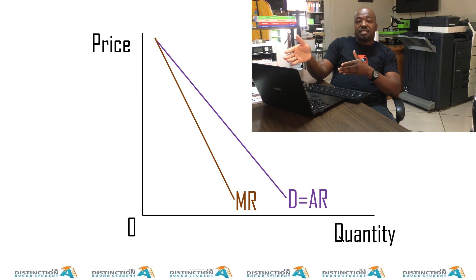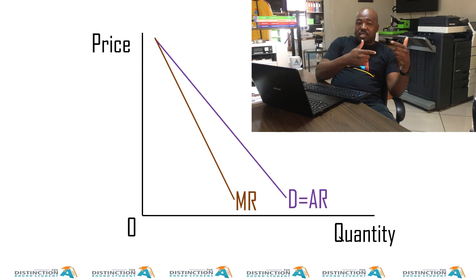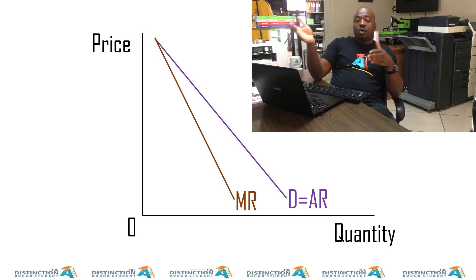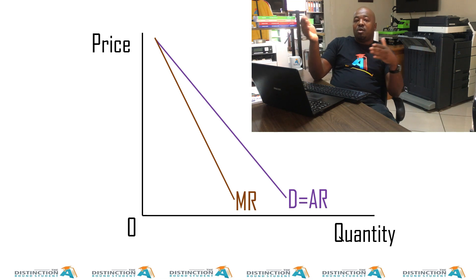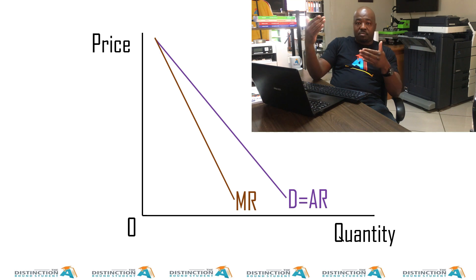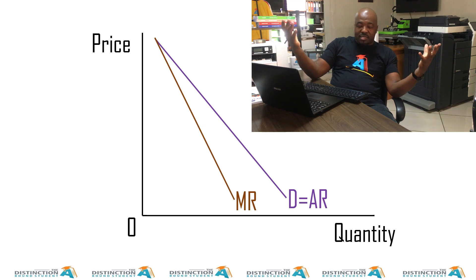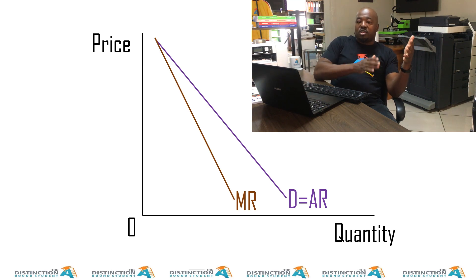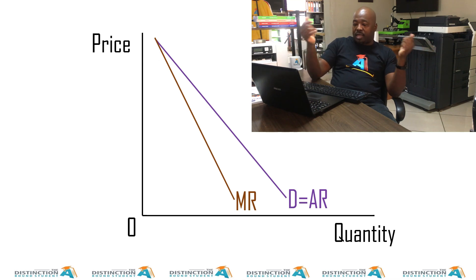That same question can be recycled and asked in as far as the monopoly is concerned. Instead of asking why MR equals AR, they ask why MR is not equal to AR, or why MR is not equal to demand. The answer is because each additional unit is sold at a lower price — not at the same price. If you want to be 100% correct, you say each additional unit is sold at a lower price.